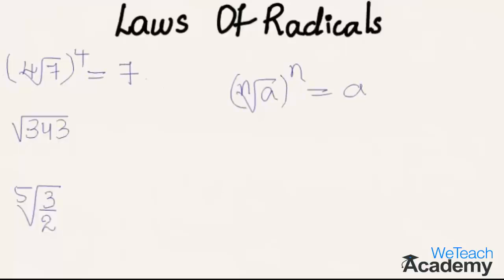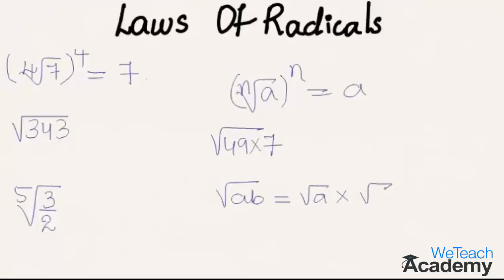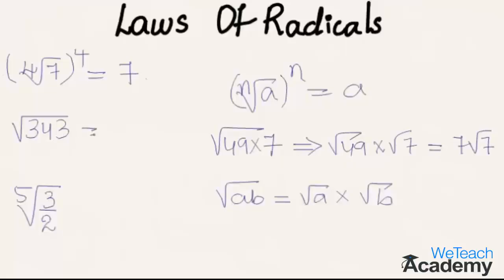The next example is the square root of 343. Square root of 343 can be written as the square root of 49 times 7. Using the law that the square root of ab equals root a times root b, we get square root of 49 times square root of 7, which gives us 7 root 7. So square root of 343 equals 7 root 7.